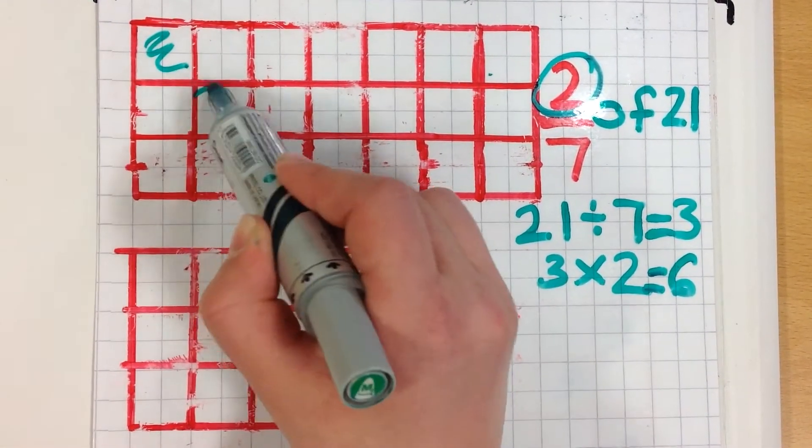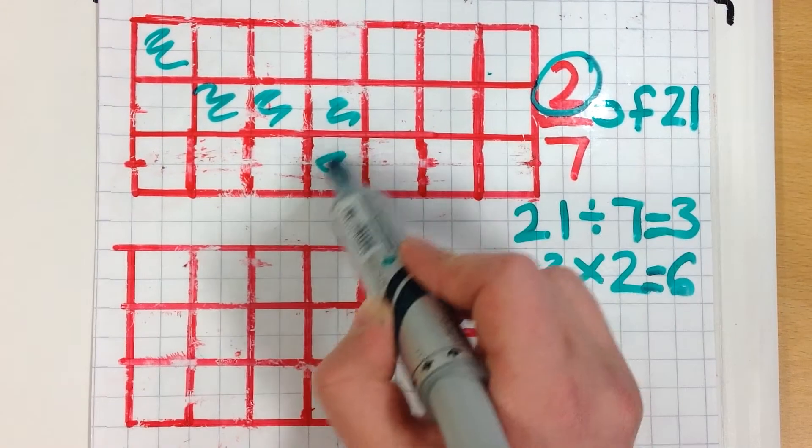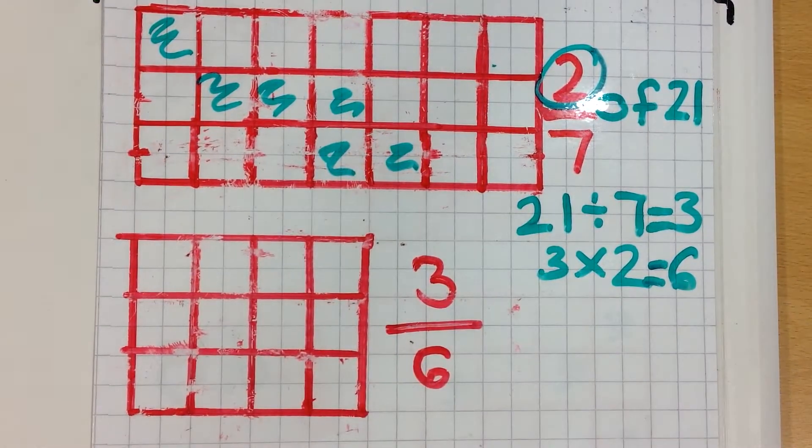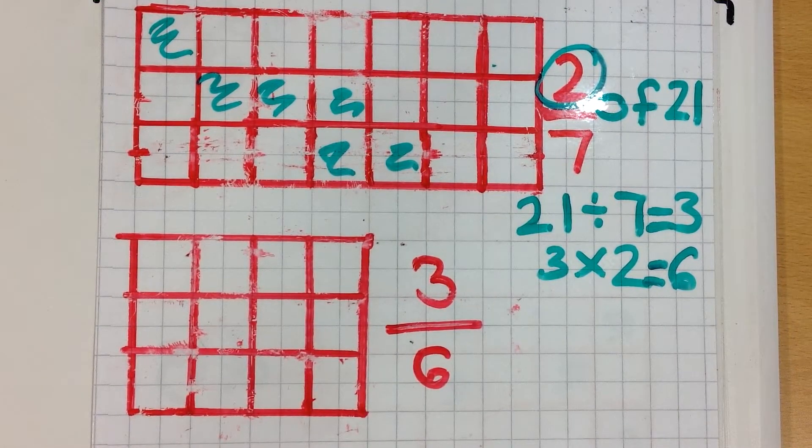So 1, 2, 3, 4, 5, 6. It doesn't matter which squares you shade in, as long as it's the right answer.